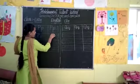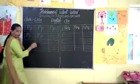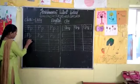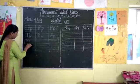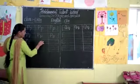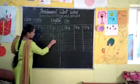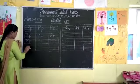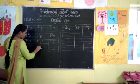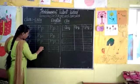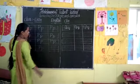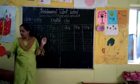Okay children — capital P, first three lines. Small p, second line to fourth line. This is the letter P. Capital P and small p. Got it children?